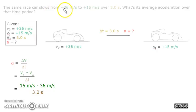Then we substitute the values given. We get 15 meters per second minus 36 meters per second over 3.0 seconds. After we calculate, the final answer is 7 meters per second squared.